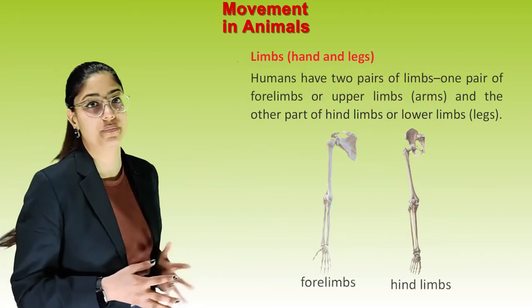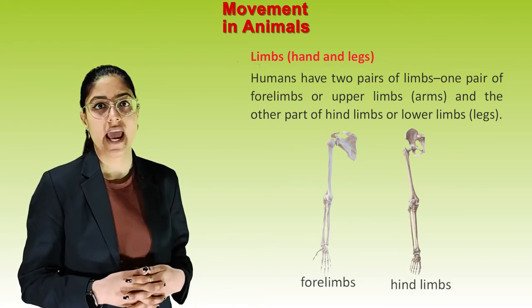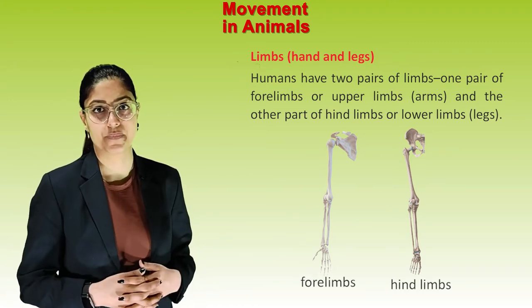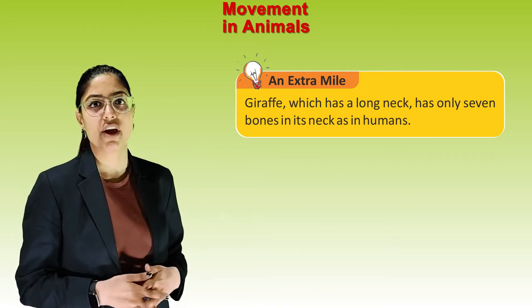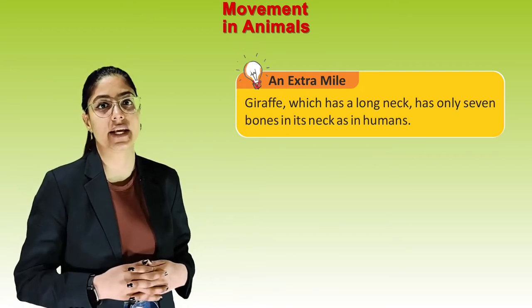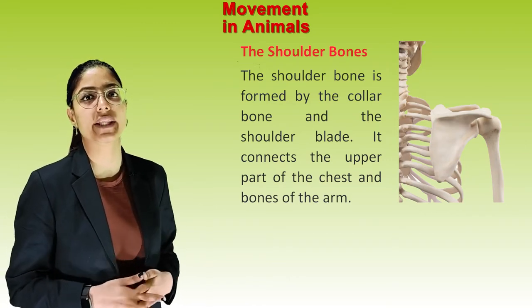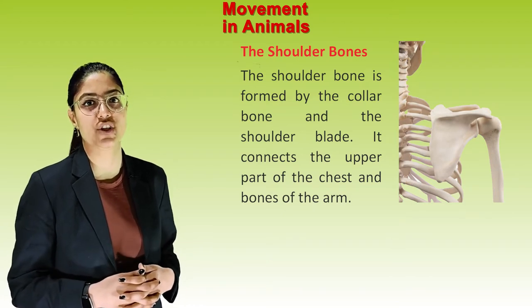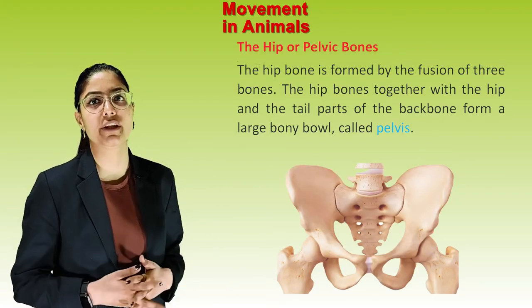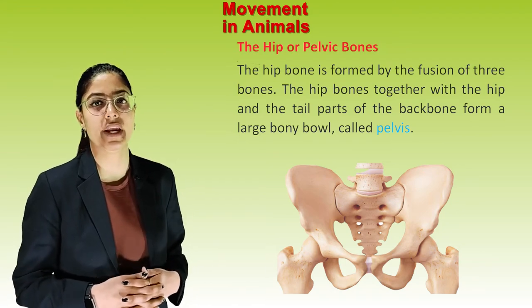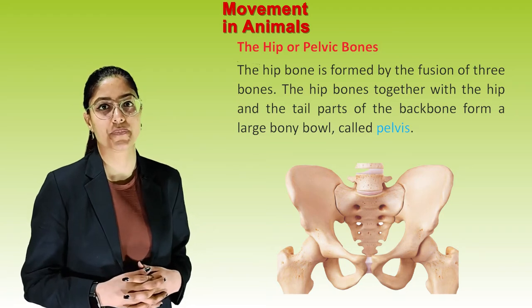Limbs, shoulder bones, and hip bones. Humans have two pairs of limbs: one pair of forelimbs or upper limbs (arms) and one pair of hind limbs or lower limbs (legs). Interestingly, a giraffe with its long neck has only seven neck bones, the same as in humans. The shoulder bone is formed by the collar bone and the shoulder blade, connecting the upper chest to the arm bones. The hip bone is formed by the fusion of three bones, and together with the tail part of the backbone, forms a large bony bowl called the pelvis.